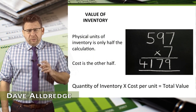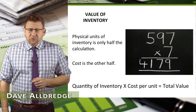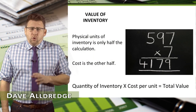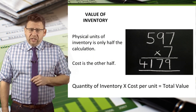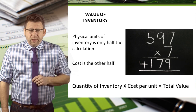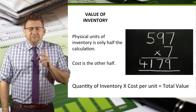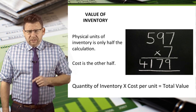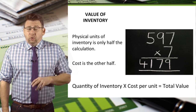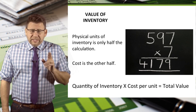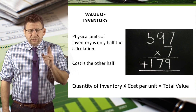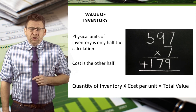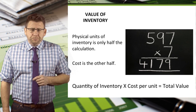In order to determine the value of inventory, the quantity of goods is only half the calculation. The other half is cost. So quantity times cost equals the total value of inventory.